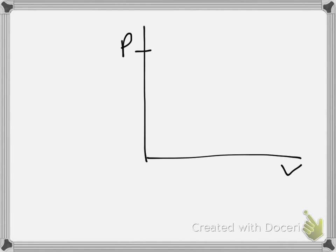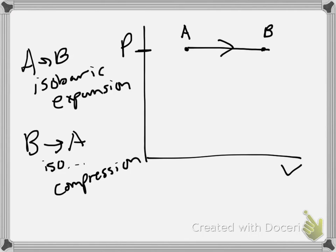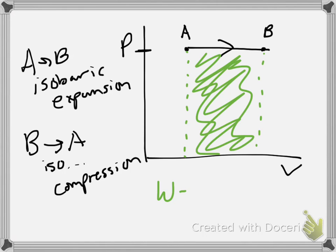On a PV diagram we keep the same pressure but change the volume, so we move from point A to point B — that's an isobaric expansion. Going from B to A would be an isobaric compression. Either way, work is being done because work equals the area under the graph: W = -P × ΔV. That gives you the work for an isobaric process.